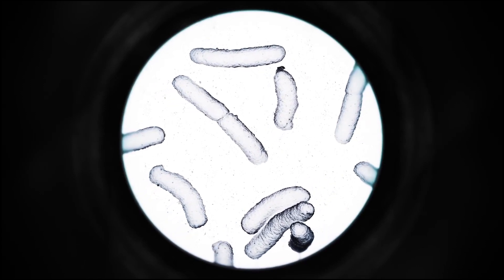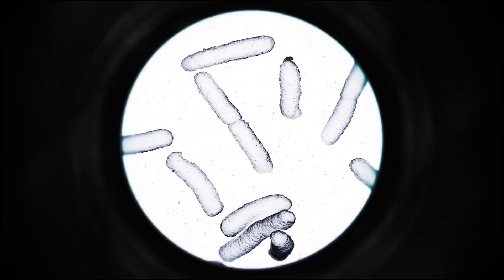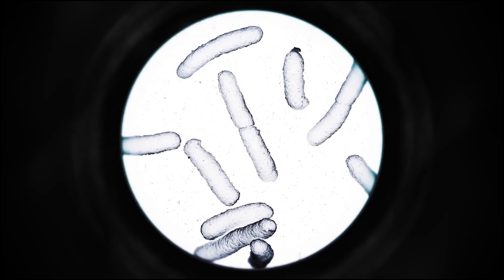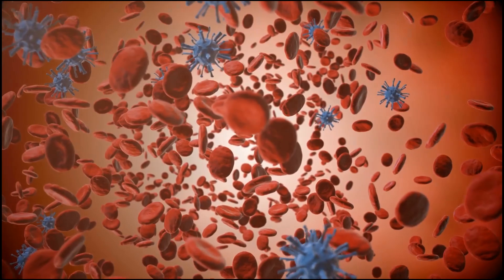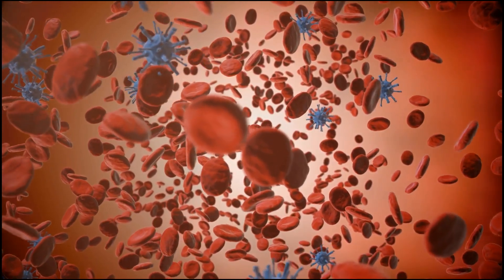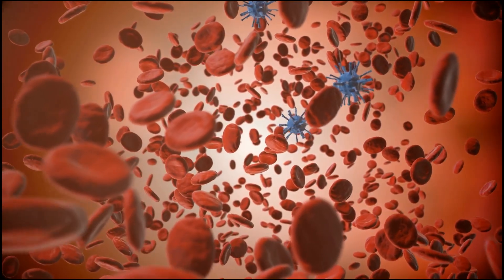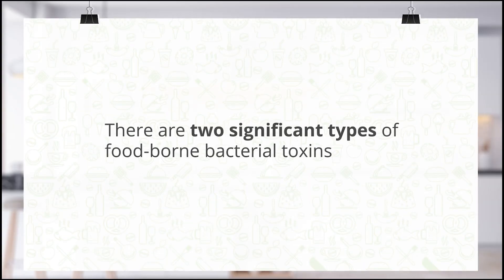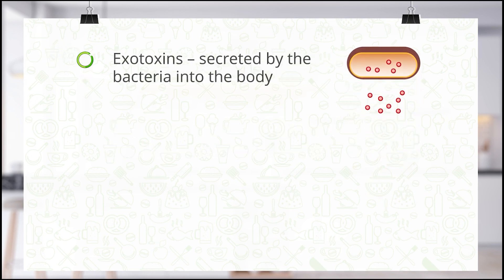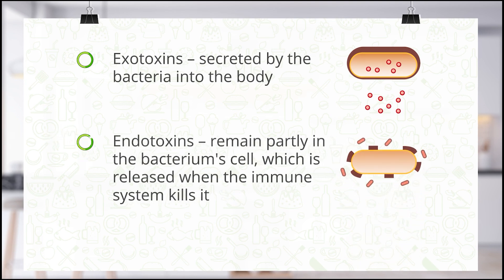Not all bacteria directly cause food poisoning. Some are harmless except that they produce substances toxic to humans during their metabolic processes — the presence of these toxins in your body causes the illness. There are two significant types of foodborne bacterial toxins: exotoxins, which are secreted by the bacteria in the body, and endotoxins, which remain partly in the bacterium cell and are released when the immune system kills it.